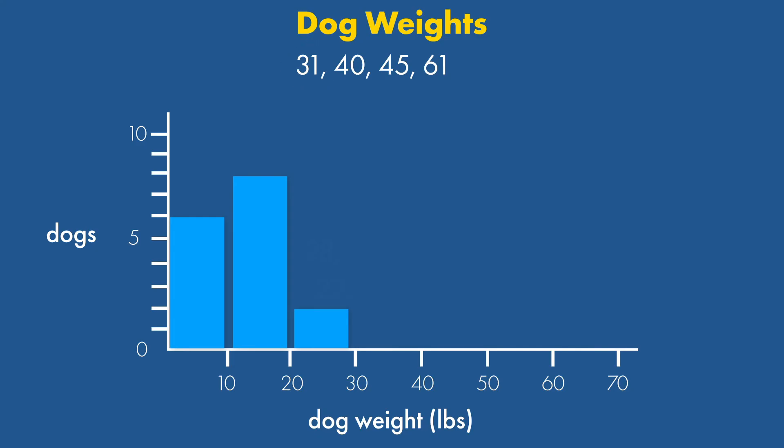This means, for our 30 to 39-pound bin, we only include the 31-pound doggo.